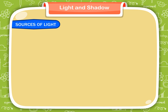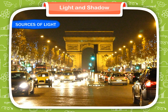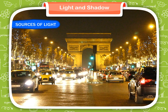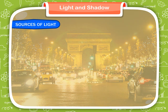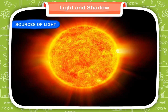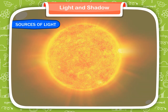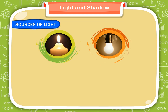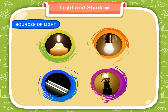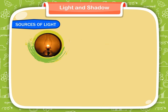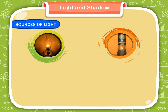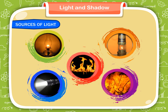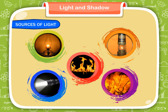Sources of Light. An object which gives us light is called the source of light. The sun is the main source of light for our planet. Burning candle, electric bulb, tube light, gas light, oil lamp, safety lamp, torch light, fire and flame are all sources of light.